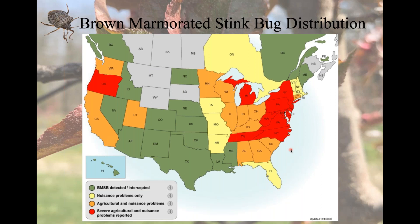This map shows that spread. Where it's red is where the greatest damage has been caused — the mid-Atlantic was the epicenter of this invasion. Moving further out, we're having agricultural and nuisance problems in the orange states. In the yellow states, it's just nuisance problems, which means it's getting into our houses and setting up shop there, and nobody really likes to see large numbers of them in their home.